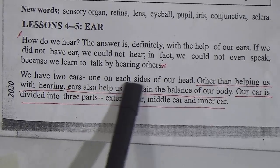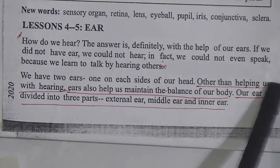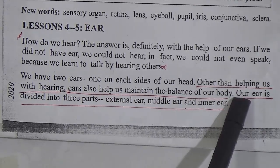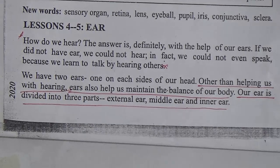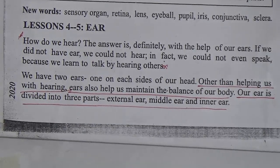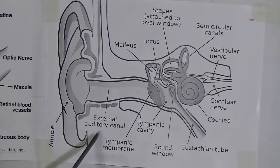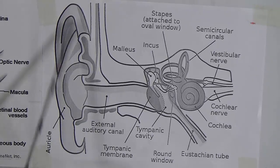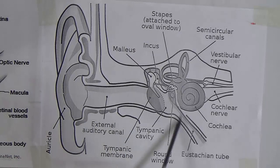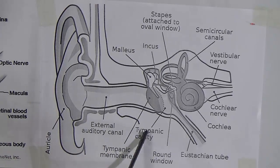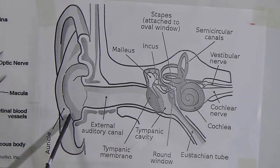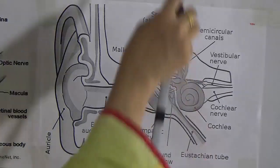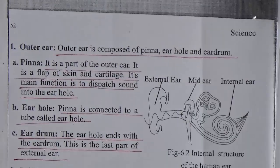We have two ears, one on each side of our head. Other than helping us with hearing, ears also help us maintain the balance of the body. Our ear is divided into three parts: external ear, middle ear, and inner ear. Looking at the diagram, this outer part is the external ear, then the middle ear, and the innermost part is the inner ear.